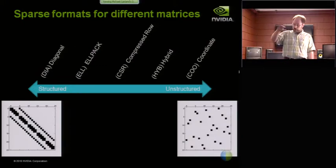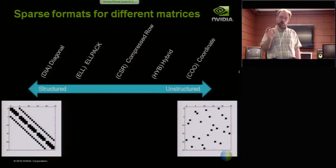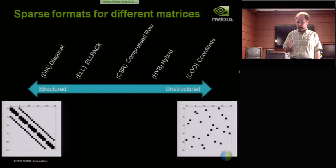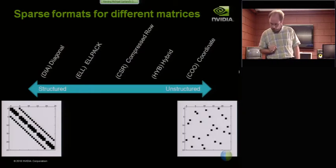This just kind of summarizes some of the different ones I've told you about. The only one on this diagram I didn't tell you about is the diagonal kernel that's specialized for diagonal matrices. I didn't tell you about that because it looks almost identical to the ELL kernel with just some little tweaks.